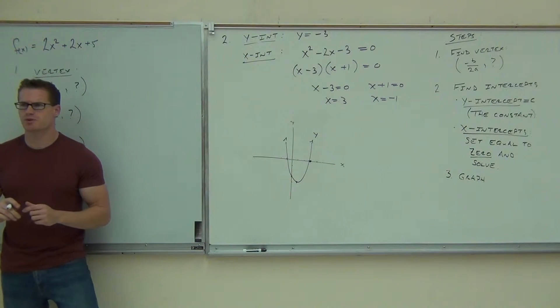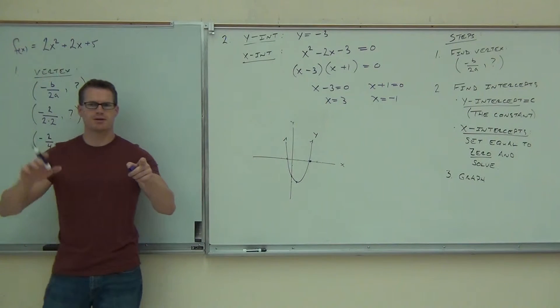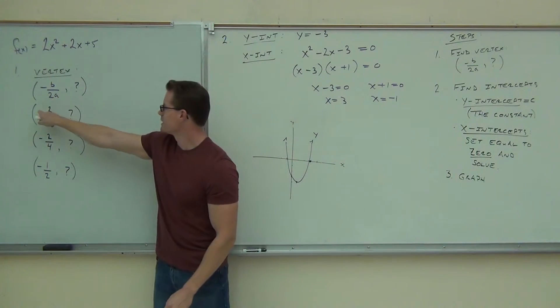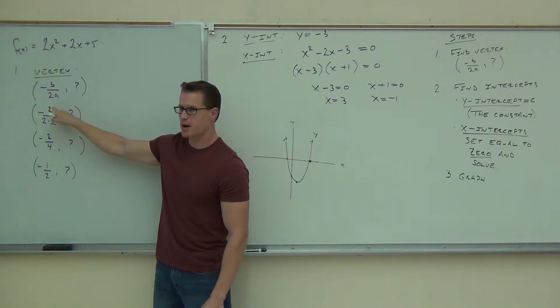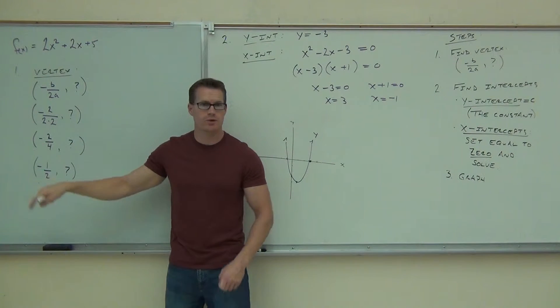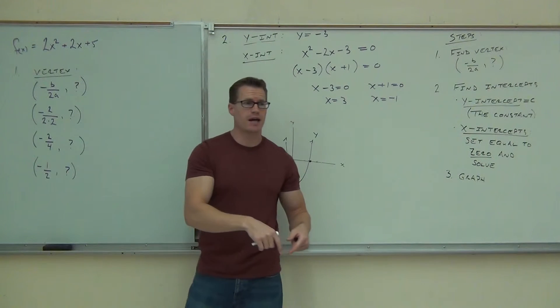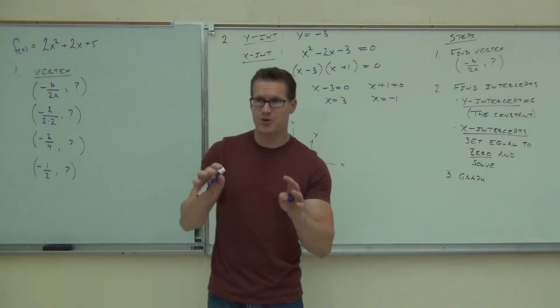What did you get for your x-coordinate? Negative one-half. How many people got negative one-half? Why did we get negative one-half? Well, we got negative two. That's our B, right? Over 2 times A. Don't forget about your A. Your A is not always 1. In this case, your A is 2. So do you see how we're getting the negative 1 half, folks?